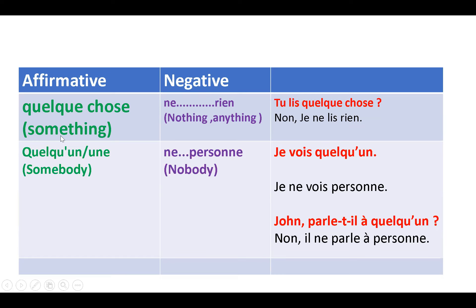The next one is 'quelqu'un' (somebody). The negation becomes 'personne' (nobody), using 'ne...personne.' For example, 'je vois quelqu'un' — I see someone. To negate: 'je ne vois personne' — 'ne' comes first, then the verb, then 'personne.' There is no 'pas.' Another example: 'Jean parle-t-il à quelqu'un?' — is he talking to anyone? Negation: 'non, il ne parle à personne.'